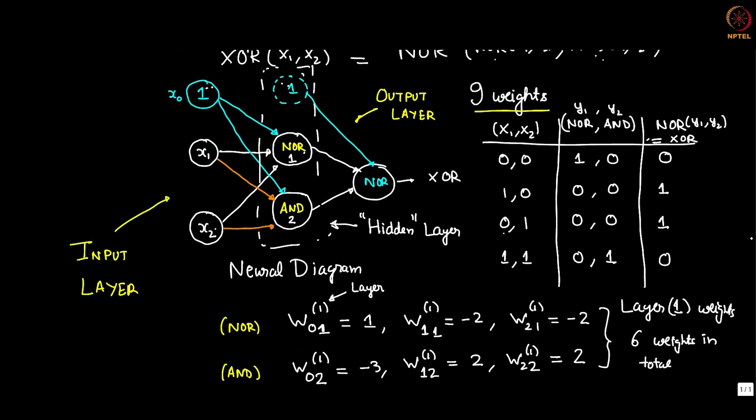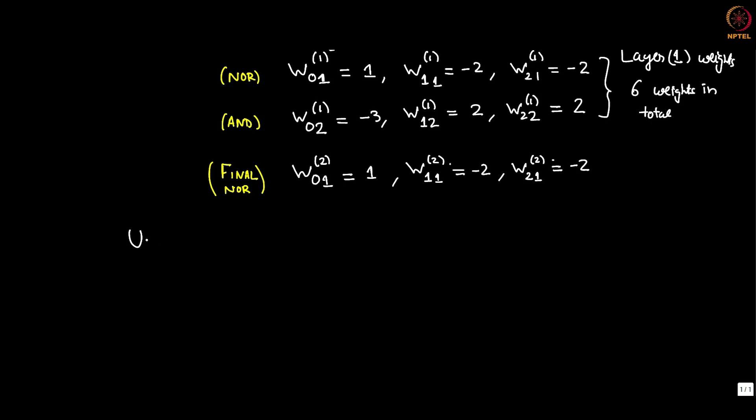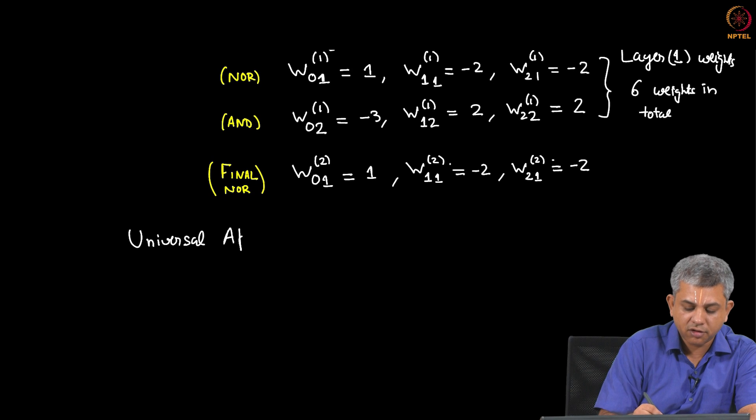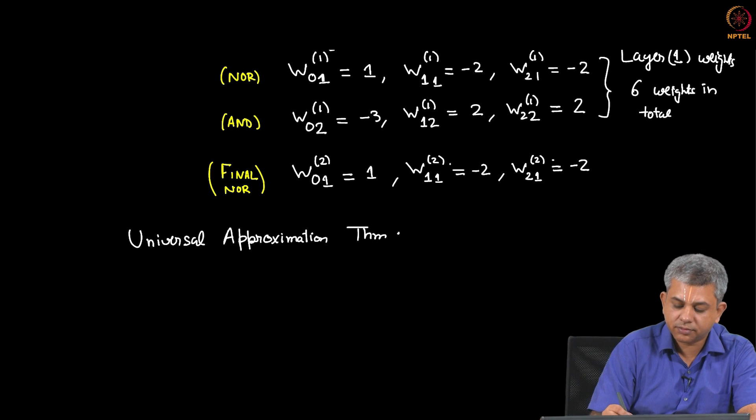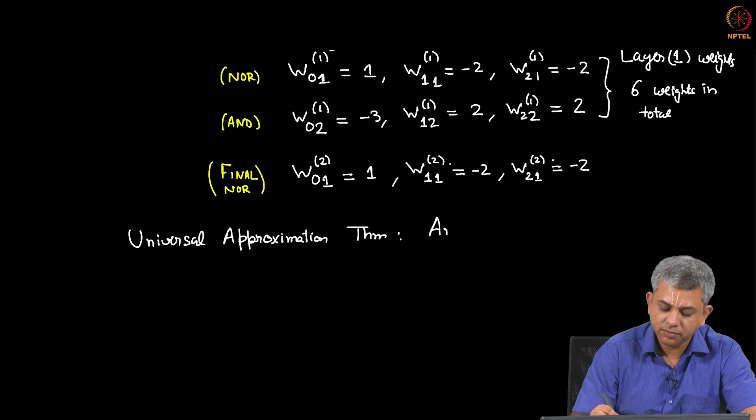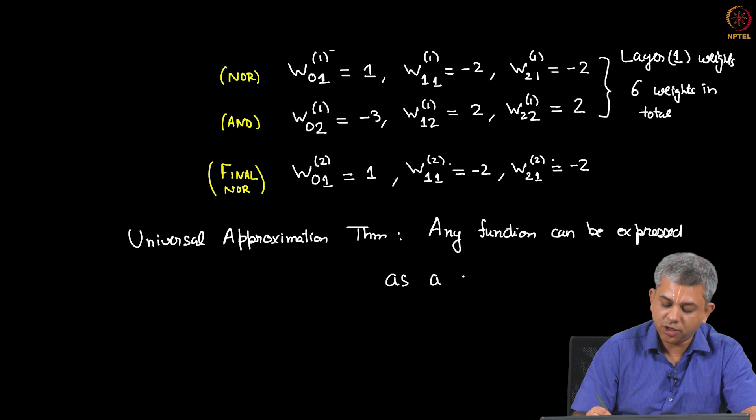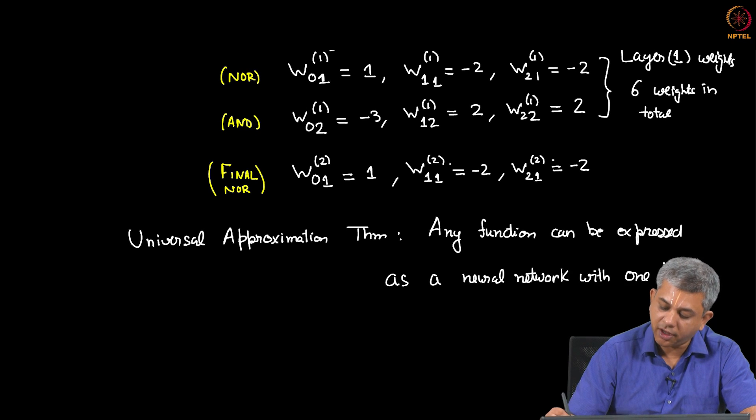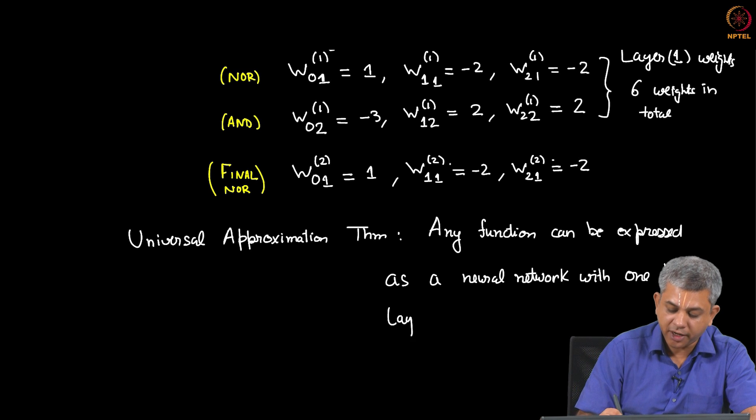You can see therefore that an XOR gate can be written as a neural network. We will call this kind of diagram a neural network. Each of these sitting here are neurons. So it can be written as a neural network with one hidden layer. It turns out there is a theorem called the universal approximation theorem, which I am going to define very loosely here, that any function can be expressed as a neural network with one hidden layer. So as it turns out this one hidden layer has tremendous expressive power.